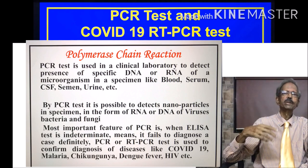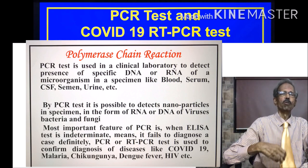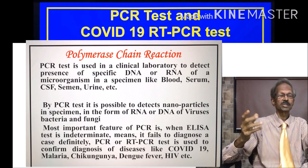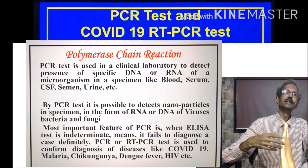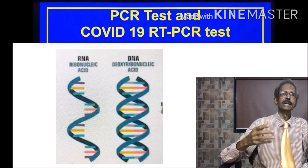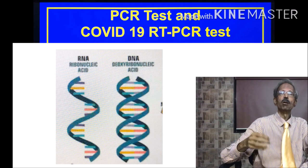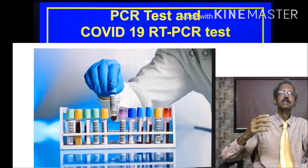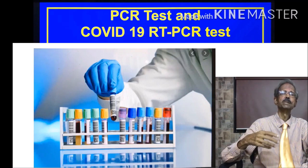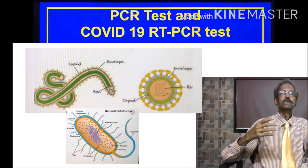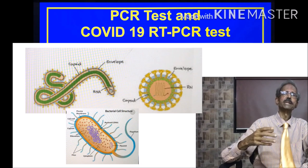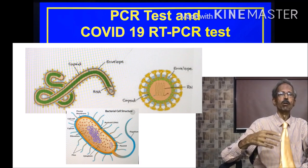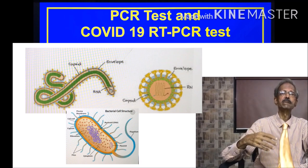Hello, today I will give you information on Polymerase Chain Reaction, that is the PCR test. PCR test is used in the clinical laboratory to detect the presence of specific DNA or RNA of a microorganism in a specimen like blood, serum, CSF, semen, urine, etc. By PCR test, it is possible to detect nanoparticles in a specimen in the form of RNA or DNA of viruses, bacteria, and fungi.